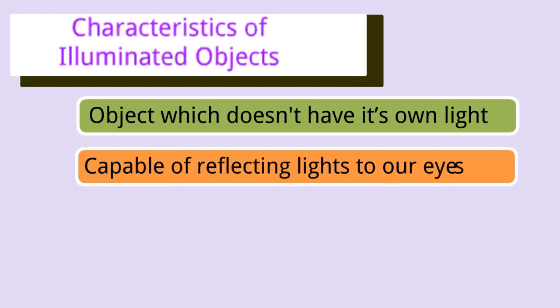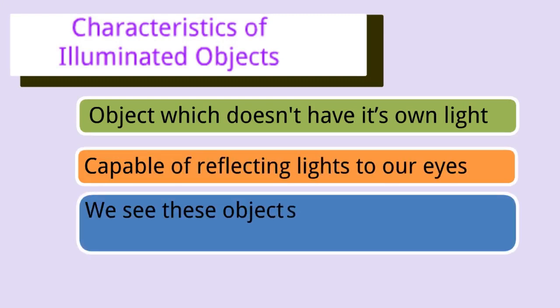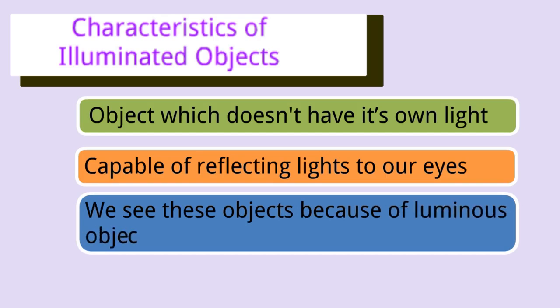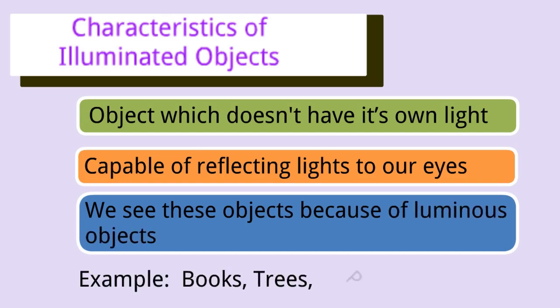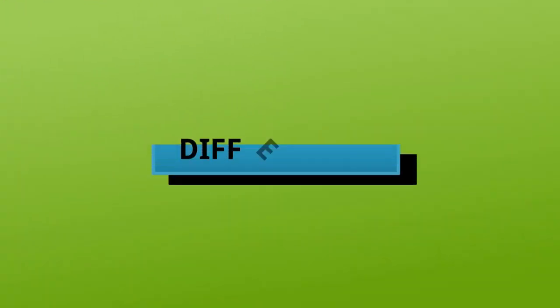Characteristics of illuminated objects: an illuminated object does not have its own light but is capable of reflecting light to our eyes. We see these objects because of luminous objects only. Examples include books, paint, trees, pencils, etc.